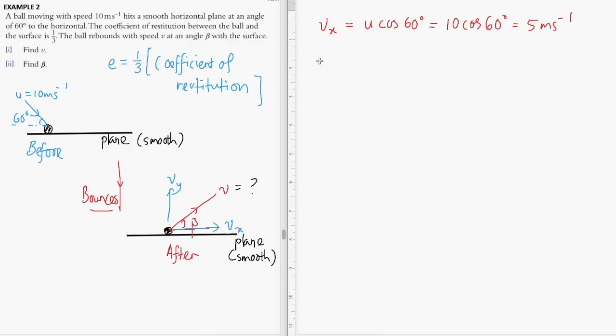For the vertical component of the velocity after collision, there will be a change due to the coefficient of restitution. vy is given as u sin 60 multiplied by e. Here, sin 60 is √3/2 and e is 1/3, so we get vy = 10 × (√3/2) × (1/3) = 5√3/3 meters per second.